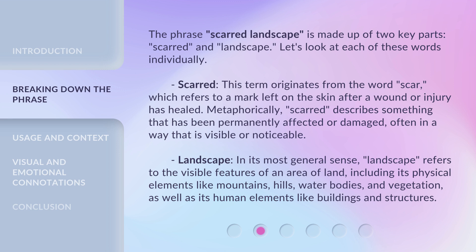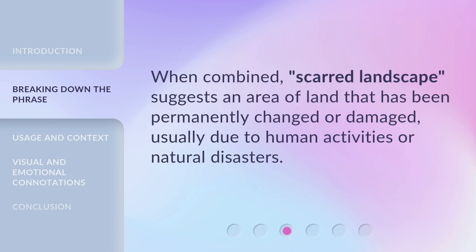Landscape: in its most general sense, Landscape refers to the visible features of an area of land, including its physical elements like mountains, hills, water bodies, and vegetation, as well as its human elements like buildings and structures. When combined, Scarred Landscape suggests an area of land that has been permanently changed or damaged, usually due to human activities or natural disasters.